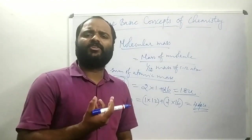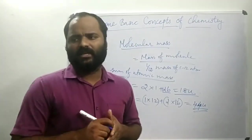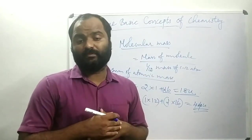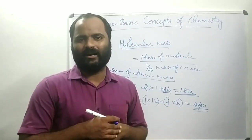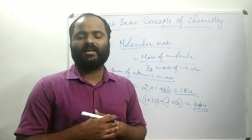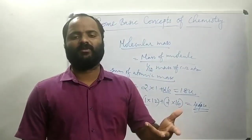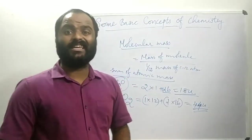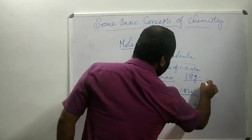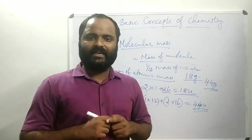The next concept is gram atomic mass and gram molecular mass. When you express atomic mass in grams, it is called gram atomic mass. When you express molecular mass in grams, it is gram molecular mass. In the case of water, the molecular mass is 18 grams; in the case of carbon dioxide, it is 44 grams. That is all about today's session. Thank you.